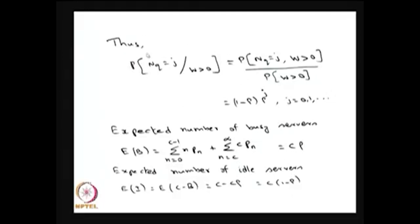Using that, I am finding the conditional probability — what is the conditional probability that j customers are in the queue given that the waiting time is greater than 0. If I do a little simplification, I will get 1 minus rho times rho to the power j, where rho is lambda divided by c times mu. This is nothing but the probability mass function of the geometric distribution. Therefore, this conditional probability is geometrically distributed with the parameter rho.